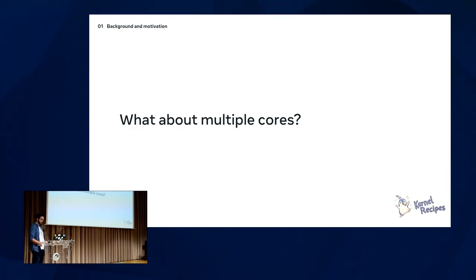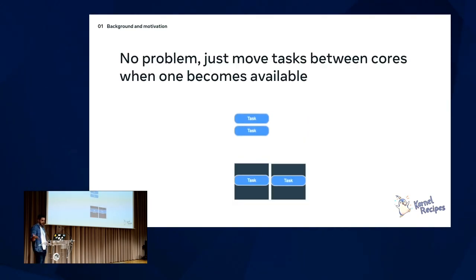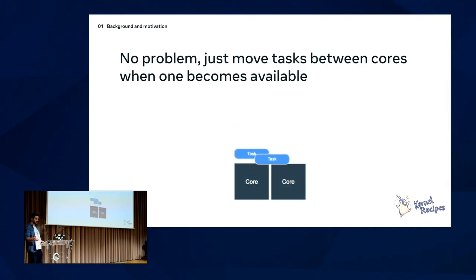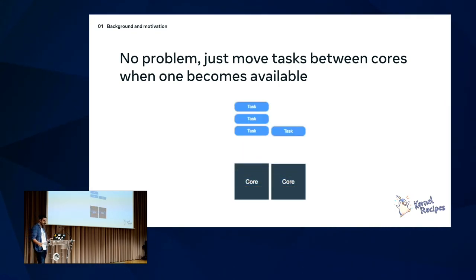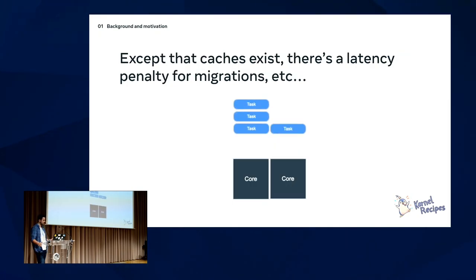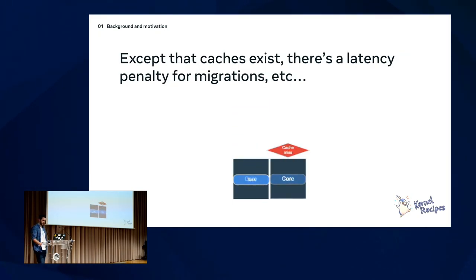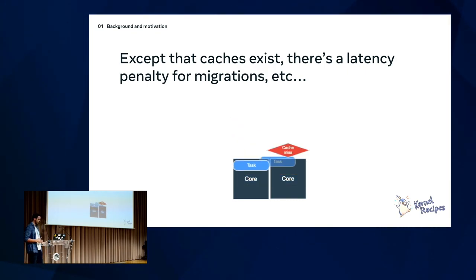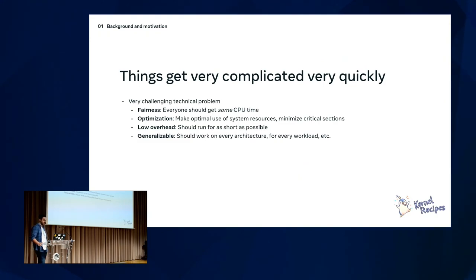We're not single-core anymore — we have multiple cores. If we have multiple tasks on one core, we can migrate them to a different core, which seems straightforward. Except maybe you don't want to migrate a task because you'd get a cache miss when it would have been better to keep it on the current core. It gets very complicated very quickly. Scheduling is a very non-trivial problem.